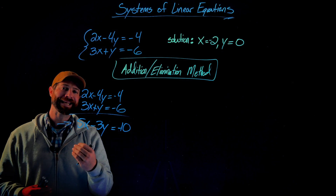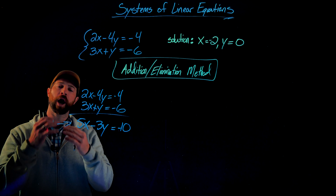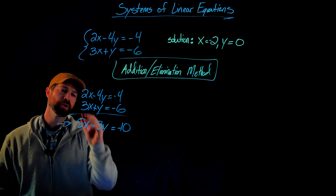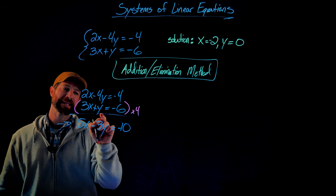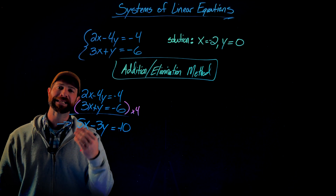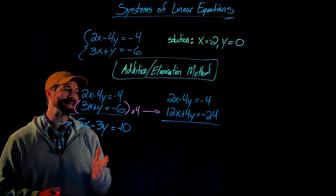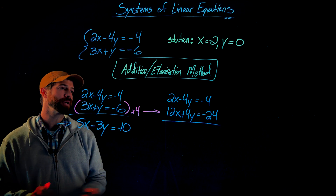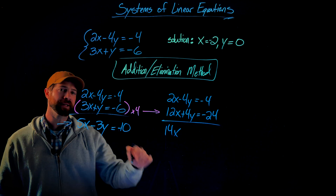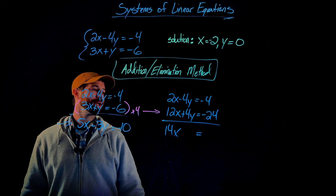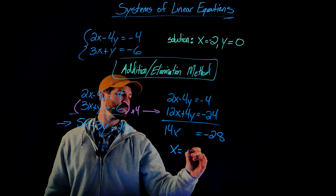Instead, I'm going to multiply one or both equations so that the coefficients for one variable are opposites of each other. In this case, I'll multiply the second equation by 4. The reason is I'm targeting the y terms: multiplying by 4 gives a positive 4y, which will cancel with the negative 4y in the first equation. When I add the equations together: 2x plus 12x is 14x, negative 4y plus 4y cancels to 0, and negative 4 plus negative 24 is negative 28. Dividing both sides by 14 gives x equals negative 2.